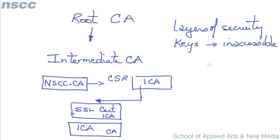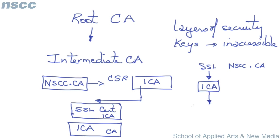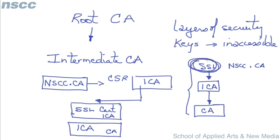So now we have a chain of certificates. We go from the SSL certificate for nscc.ca, which was issued by the intermediate CA, and that was signed by a CA that all browsers have in their list. This is called a certificate chain, or sometimes called the chain of trust.